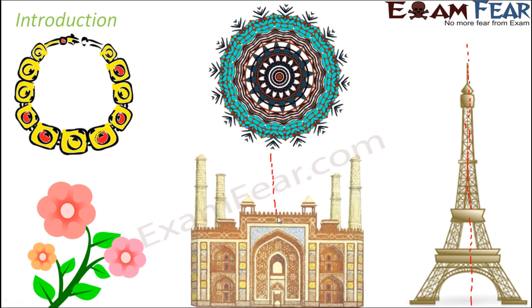Let's consider this monument. Even in this monument, if you think of a line passing through the center, everything on the right side is identical to everything on the left side. You see it has two towers — one smaller, one bigger — but all that you see on this side is exactly identical to all that you see on this side. These two halves can overlap each other completely. If you fold the paper along this line and overlap one side over the other, the two parts of the monument will exactly cover each other completely. This is what is known as symmetry.